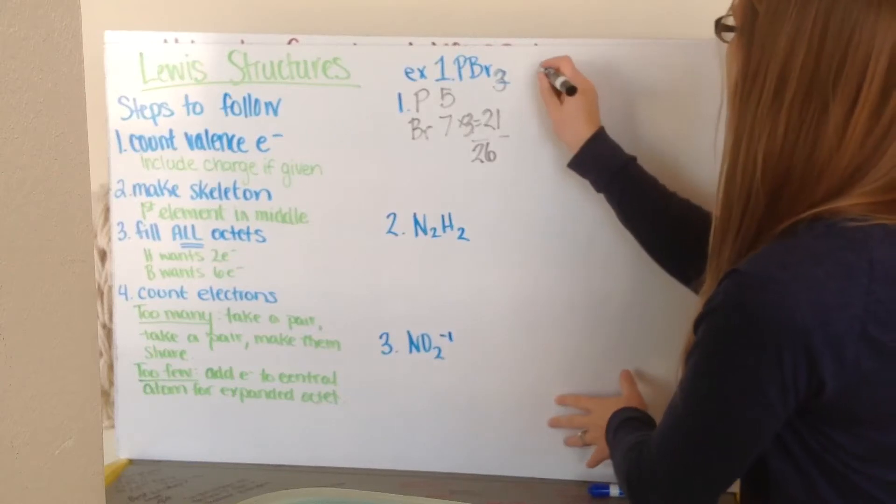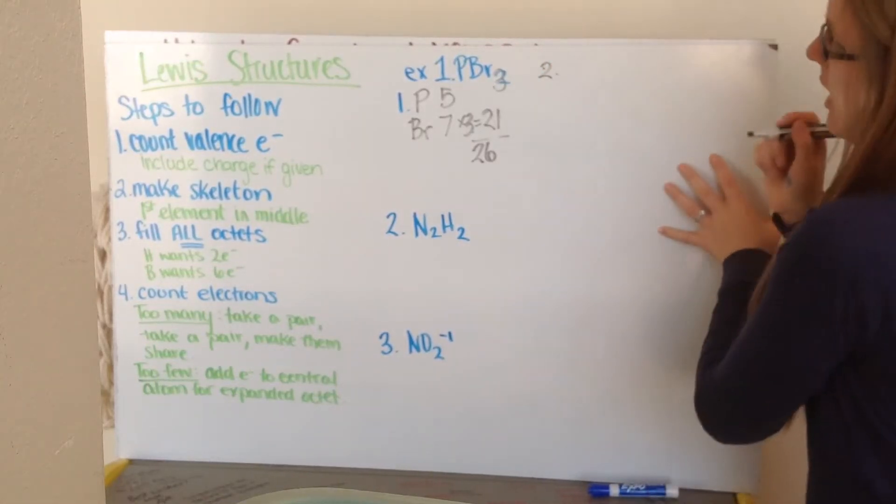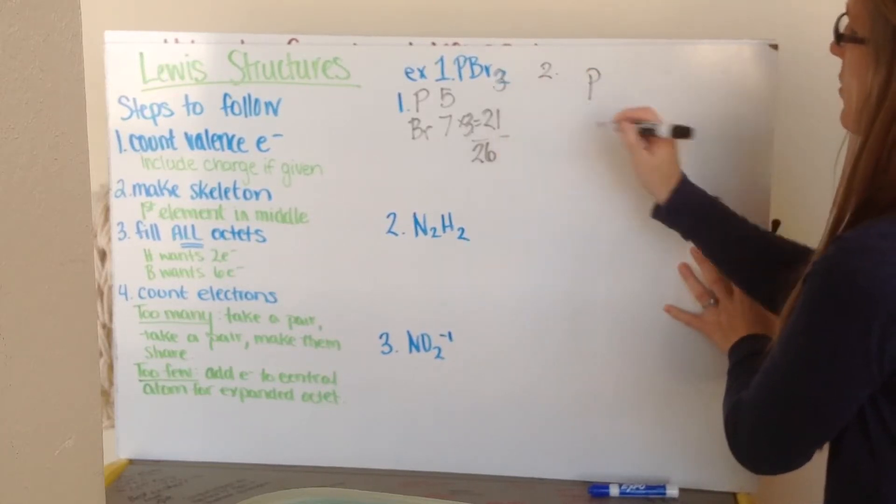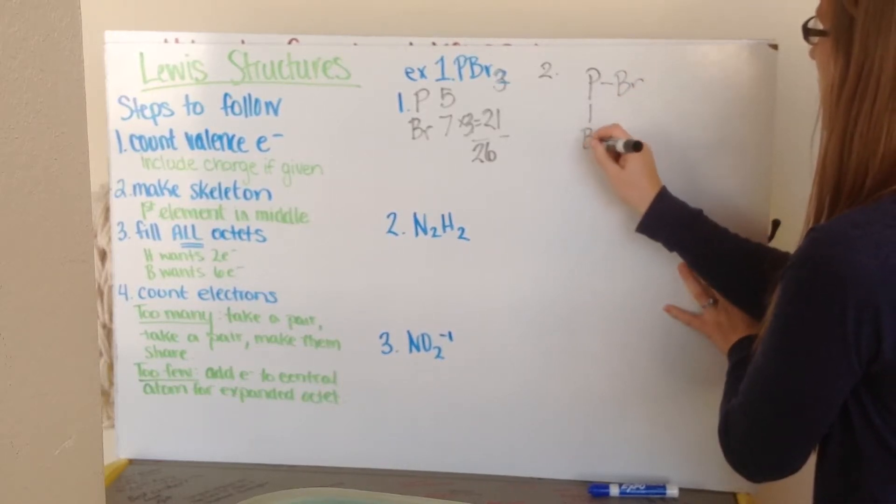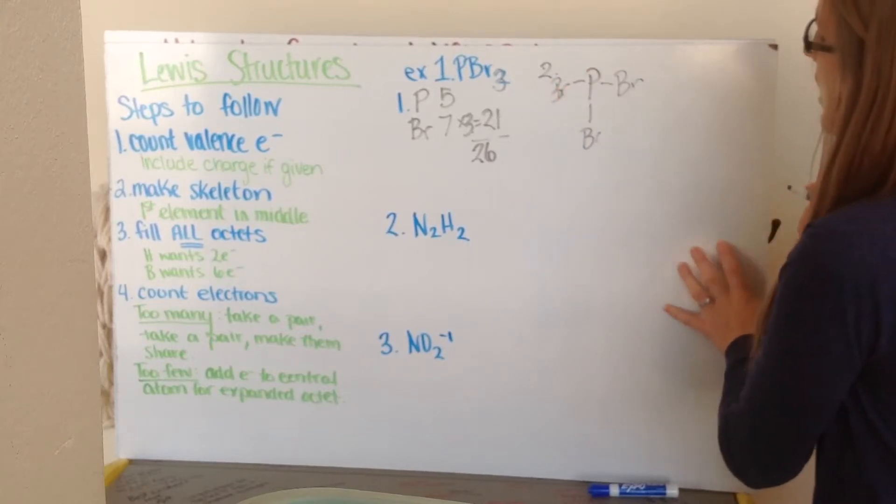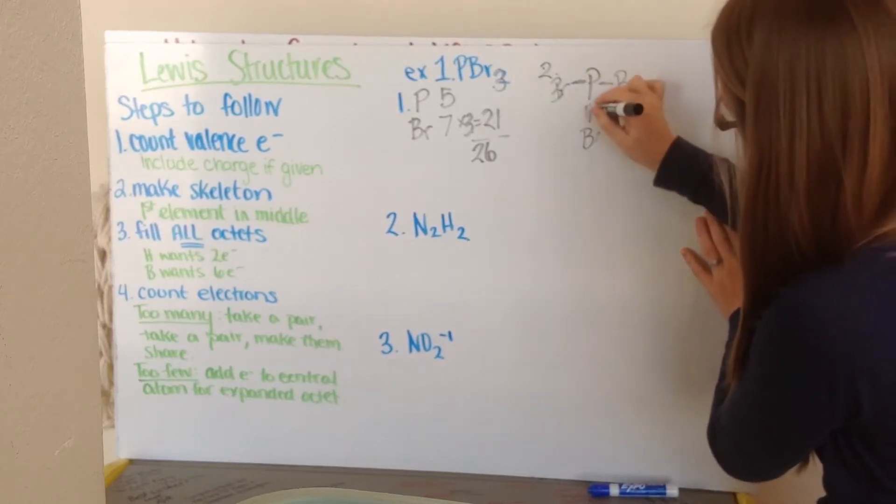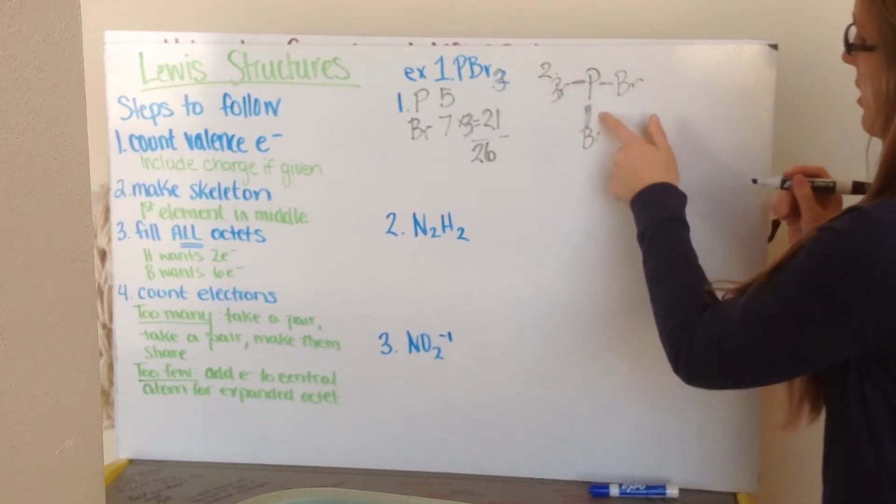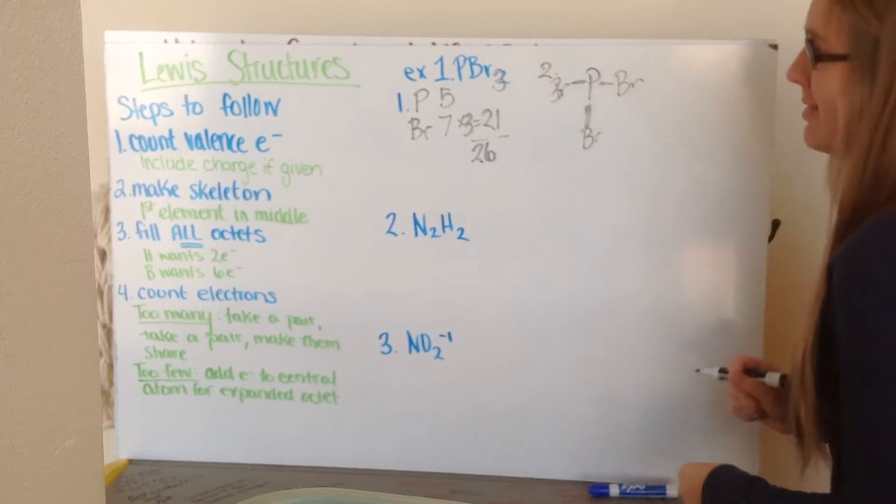Step 2, I make my skeleton. So I put step 2 here. Now like I said, I put my first element in the middle. Phosphorus is going to go in the middle. And then I'm going to put my 3 bromines coming off of that, so bromine here, here, and here. Now I know they're linked together by at least one shared pair of electrons, because these are all going to be covalent bonds. So I have one pair of electrons here. And so again, these are representing my single bonds. I can have double bonds and triple bonds, and we'll get into those as they come.